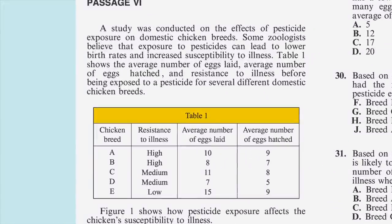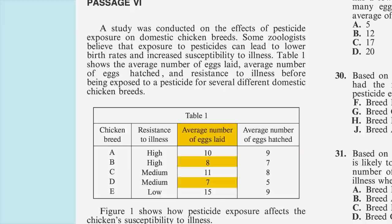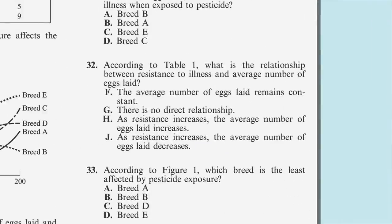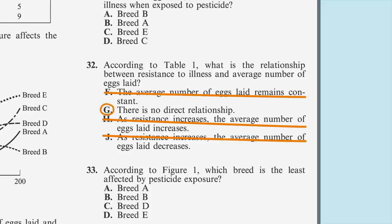There are actually two more charts with this passage, but this question only asks you to refer to Table 1. First, look at the column for Resistance to Illness — notice the chicken breeds are listed in order of highest to lowest resistance. Next, compare the Resistance to Illness column to the column showing the average number of eggs laid. You can see there is no smooth transition from lowest to highest or highest to lowest in the average number of eggs laid column. In fact, the numbers appear to be all over the place. Because the average number of eggs laid does not remain constant, answer F is not correct. Also, eggs laid neither increases nor decreases relative to resistance, so H and J are also not correct. Therefore, the only answer that makes sense is G: there is no direct relationship.